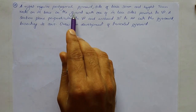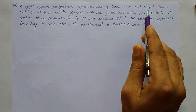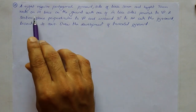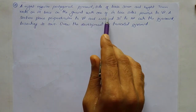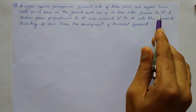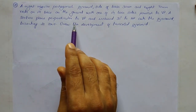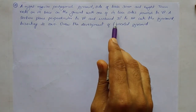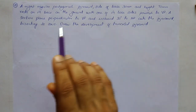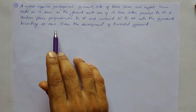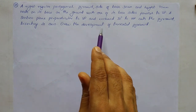A right regular pentagonal pyramid, with side of base 30 mm and height 70 mm, rests on its base on the ground with one of its base sides parallel to VP. A section plane perpendicular to VP and inclined 30 degrees to HP cuts the pyramid. By bisecting its axis, draw the development of the truncated pyramid.